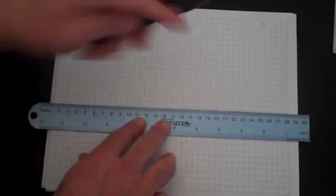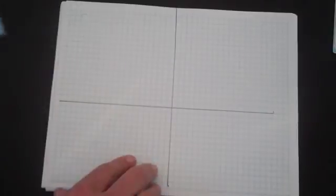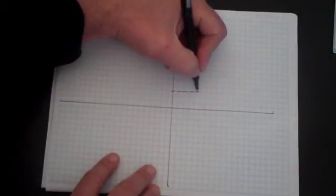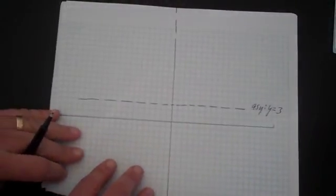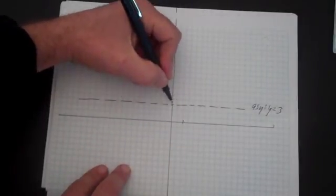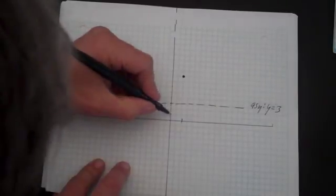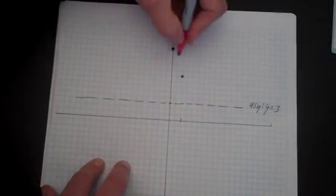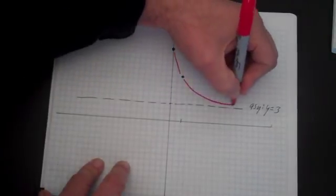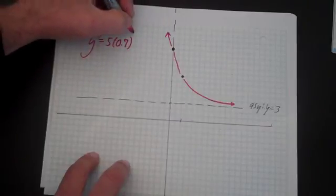If we want to graph that, the asymptote is y equals 3. 1, 2, 3. 1, 2, 3, 4, 5, 6, 7, 8. The other point is 0 and 13. 1, 2, 3, 4, 5, 6, 7, 8, 9, 10, 11, 12, 13. You already know what the general shape is. So with those two points, you'll be able to figure out more or less what the graph looks like. It looks like this. We can compare that to what we already know about it. And that, in fact, is the graph of 0.7 to the x minus 2 plus 3.